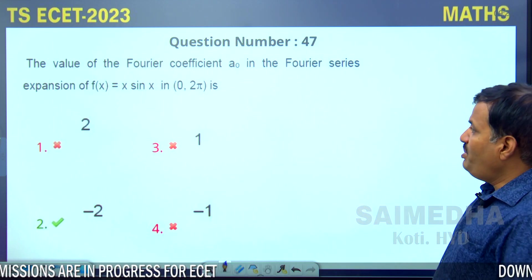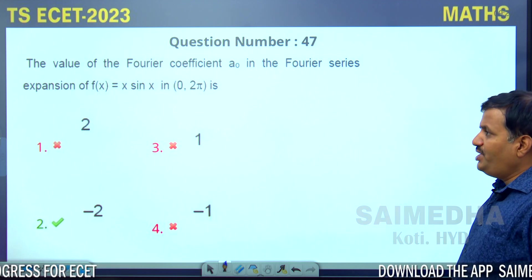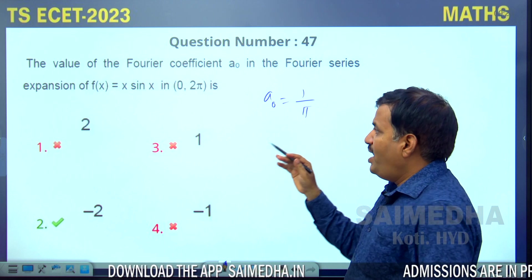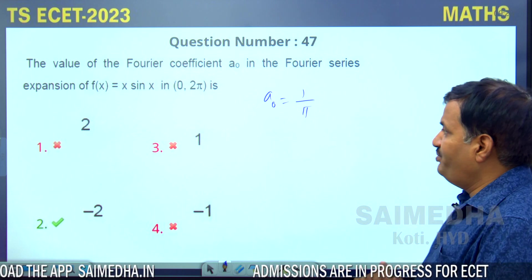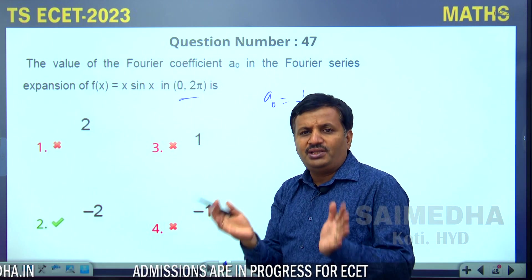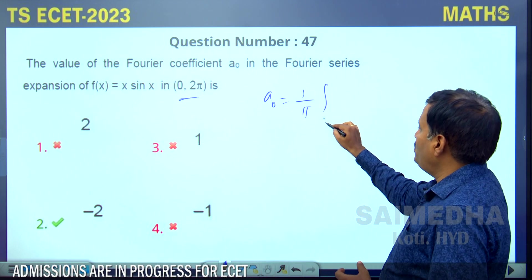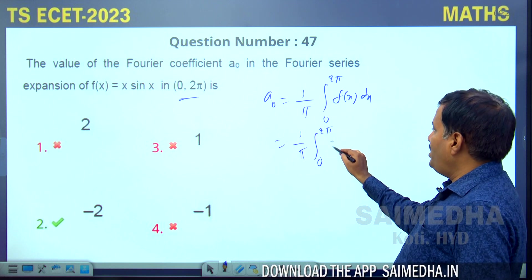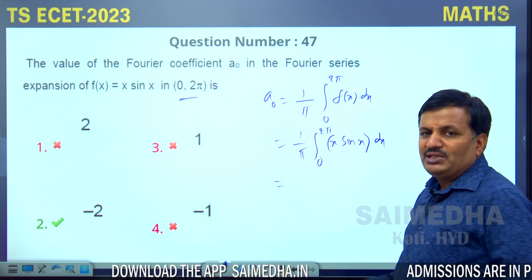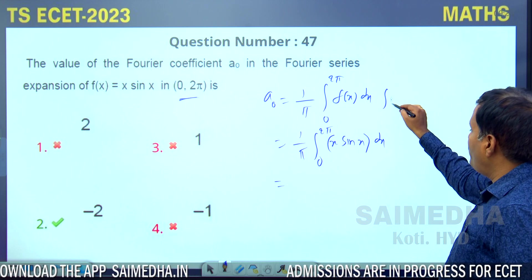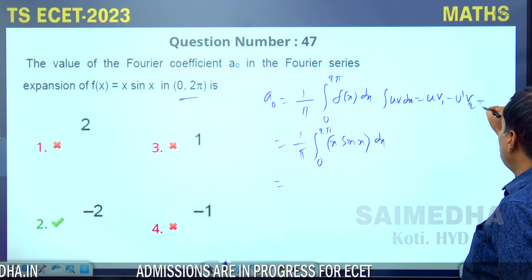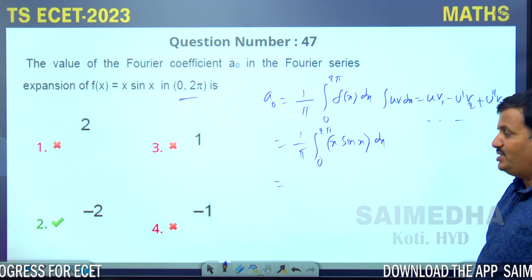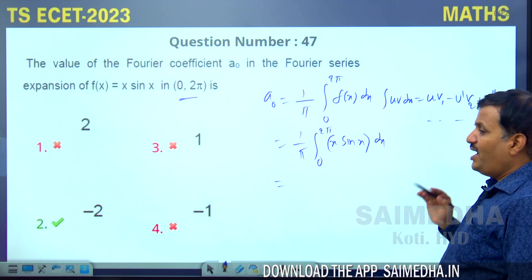For the Fourier coefficient a₀ in the Fourier series of f(x) = x·sinx on [0, 2π]: it is a full-range Fourier series. The formula is a₀ = (1/π)∫₀^{2π} x·sinx dx. We apply integration by parts (Bernoulli's rule): u = x, v = sinx.